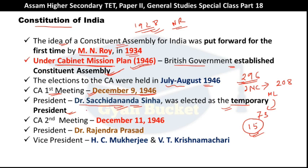The second meeting was held on December 11th. At the second meeting, the president was Dr. Rajendra Prasad — permanent president. The vice presidents were H.C. Mukherjee and T.V. Krishnamachari.